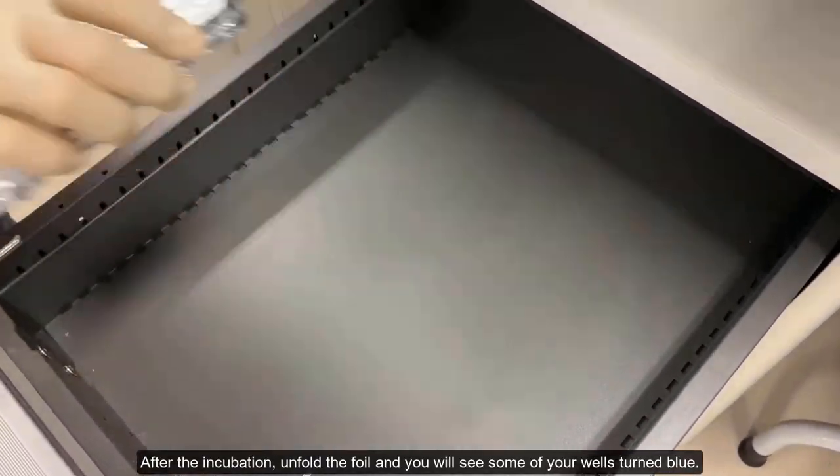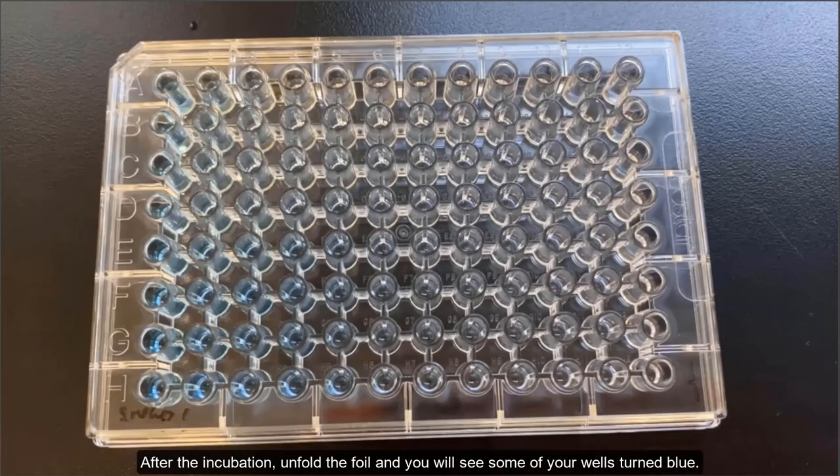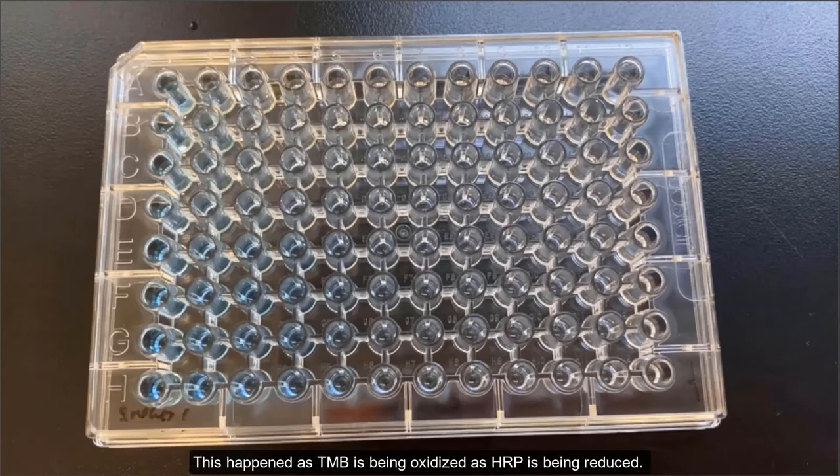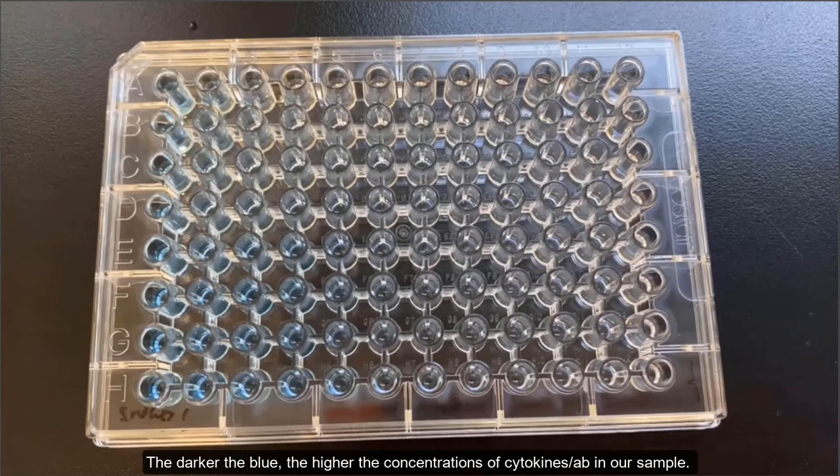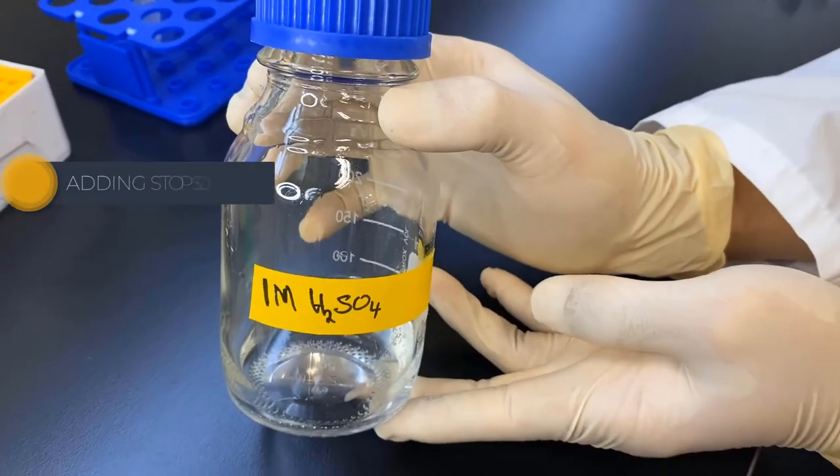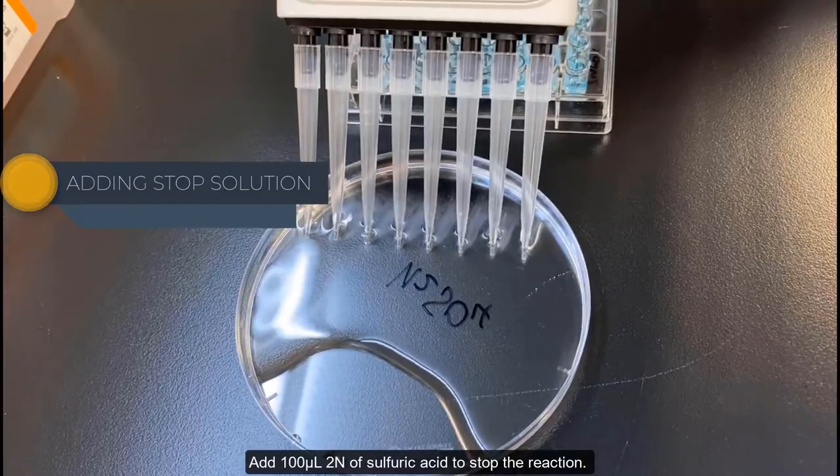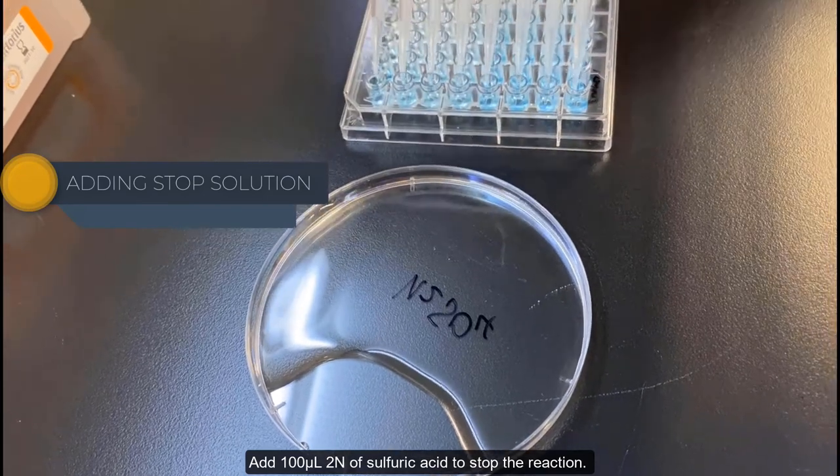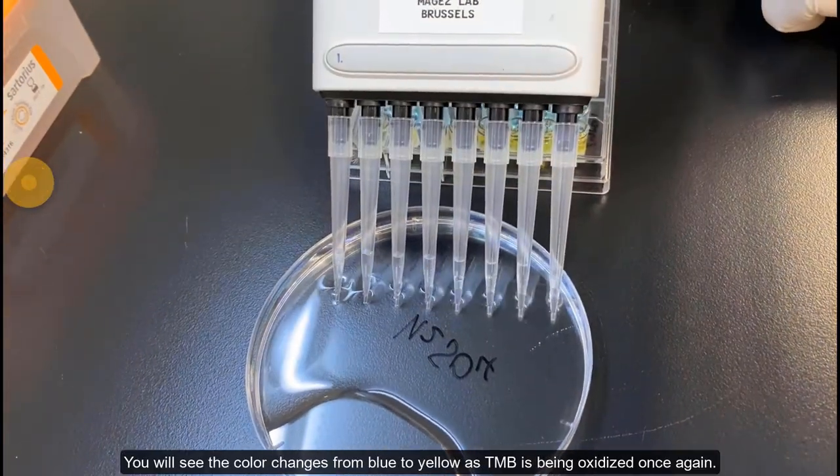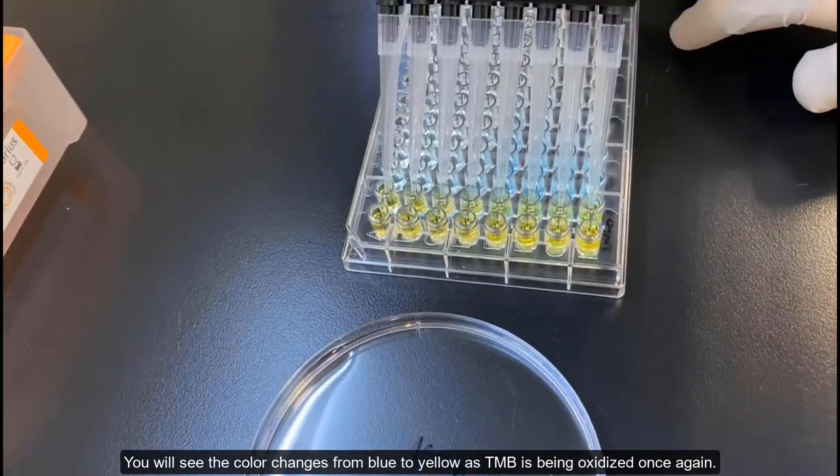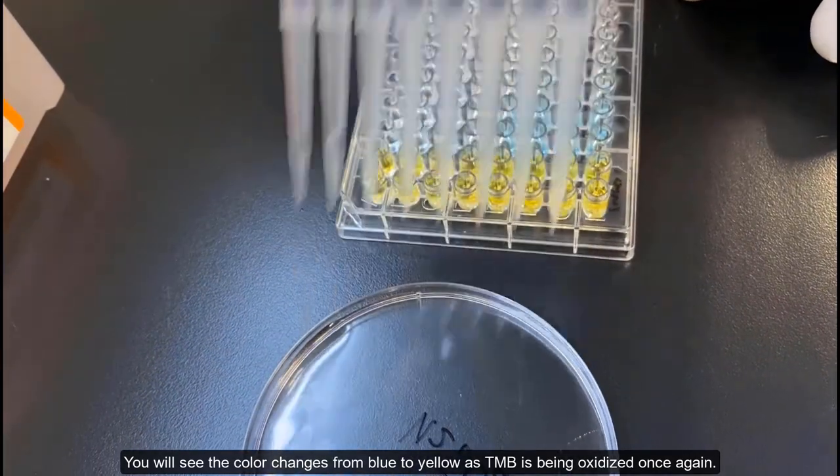After the incubation, peel off the foil and you will see some of your wells turn blue. This happened as TMB is being oxidized as horseradish peroxidase is being reduced. The darker the blue, the higher the concentrations of cytokines or antibodies in our sample. Add 100 microliters of 2N of sulfuric acid to stop the reaction. You will see the color changes from blue to yellow as TMB is being oxidized once again.